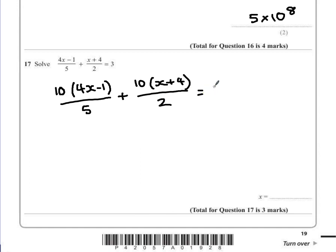and on the right we've got 3 times 10 which is 30. If we simplify this now, 10 divided by 5 is 2, so that's 2 lots of 4x take away 1, 10 divided by 2 is 5, so that's 5 times x plus 4 is all equal to 30.